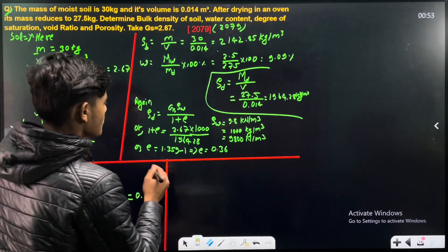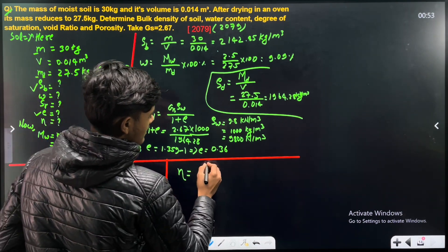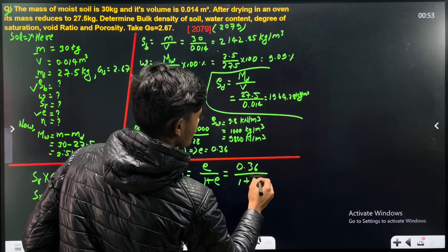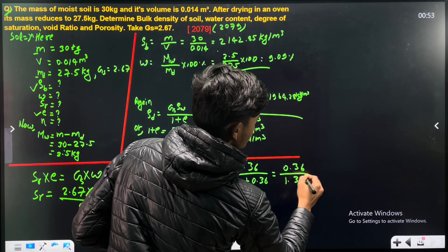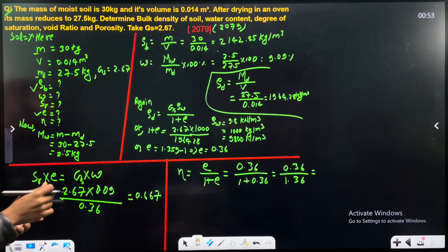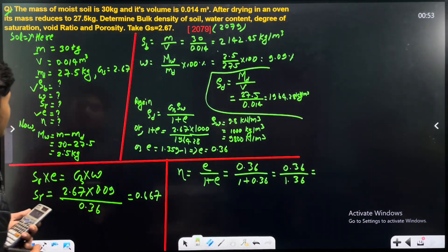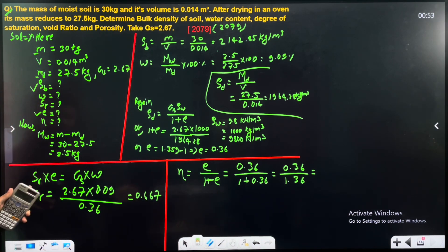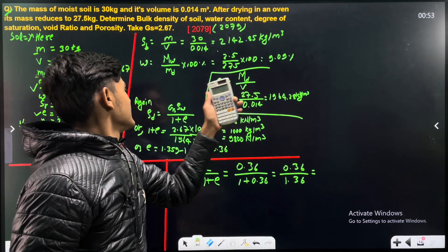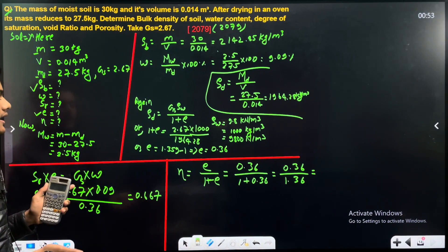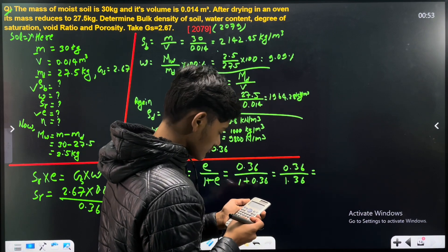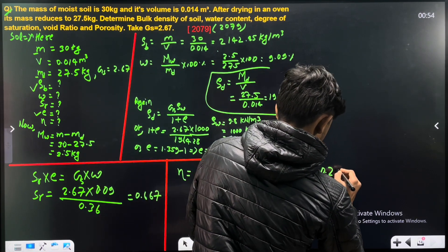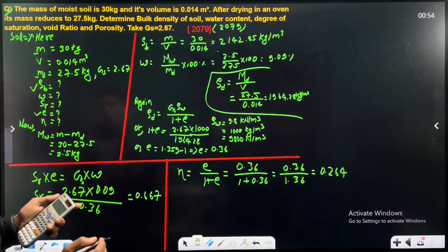Now for porosity, the formula is n equals e divided by one plus e. With e equal to 0.36, we get 0.36 divided by 1.36, which gives the porosity value. So the porosity is calculated as 0.36 divide by 1.36.